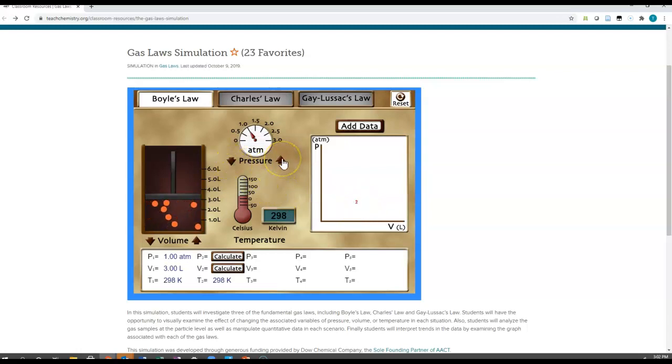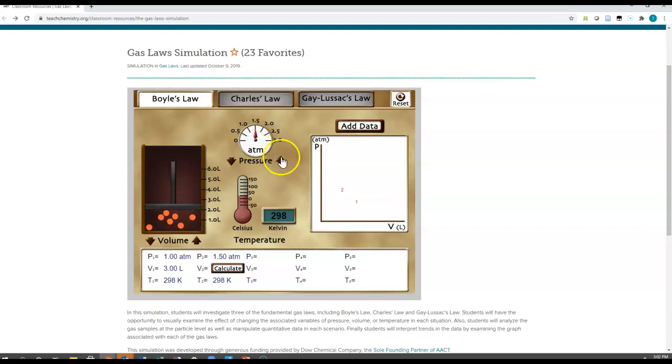I'm going to increase my pressure. Notice that as I click up, I increase the pressure. The pressure is going up, the volume here is going down.